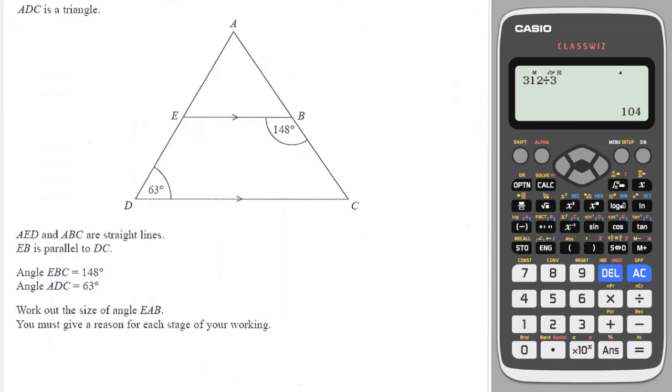Next question and we need to work out the angle EAB which is the angle EAB so it's this one here at the top. And the first angle I'm going to calculate is this one in here and this one is 63. And the reason why is because they are corresponding. So I will write AEB is 63 as corresponding angles are equal.